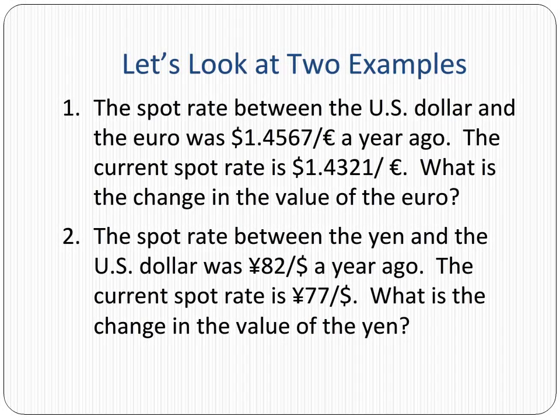Let's take a look at two examples. In the first example, the spot rate between the US dollar and the euro was 1.4567 dollars per euro a year ago. The current spot rate is 1.4321 dollars per euro. What is the change in the value of the euro?